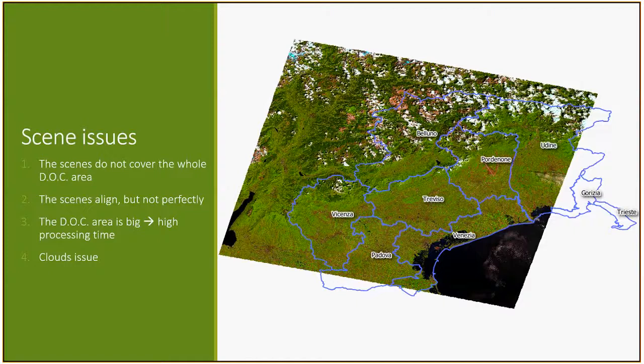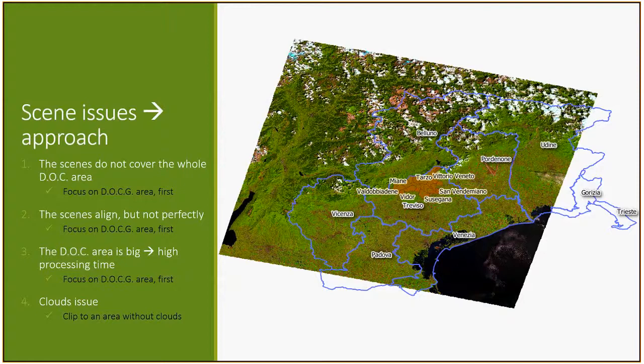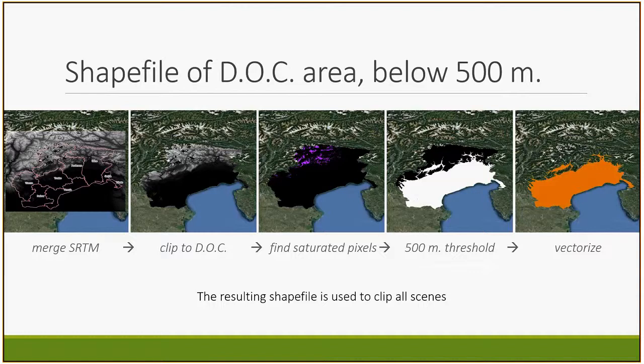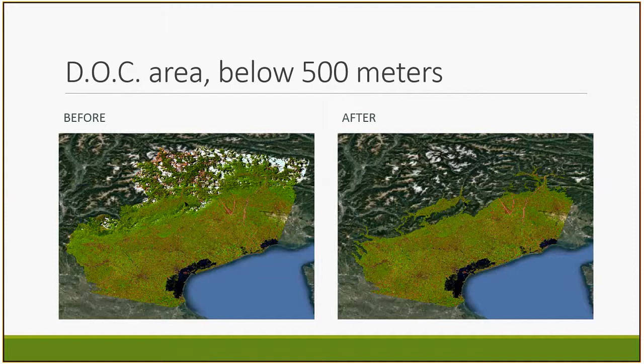Then some preprocessing and clipping. The DOC area in blue is bigger than a single scene, suggesting we should do some mosaicing. The scenes also align but not perfectly, so we should pay attention to analysis at the boundaries. We have a processing time issue due to the size of the DOC area, and almost all scenes are affected by some clouds. For the first three points, I decided to focus on the smaller DOCG area. For the clouds issue, the clouds are mainly located above mountain areas up to 2,200 meters, but grapes only grow up to 500 meters elevation. I downloaded the SRTM digital elevation files from Earth Explorer and extracted a shapefile of areas below 500 meters elevation.